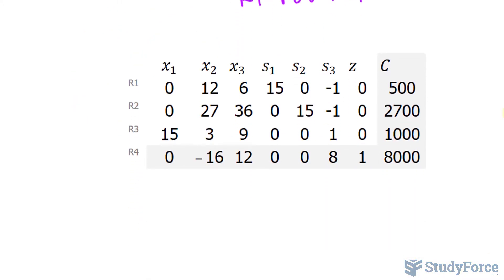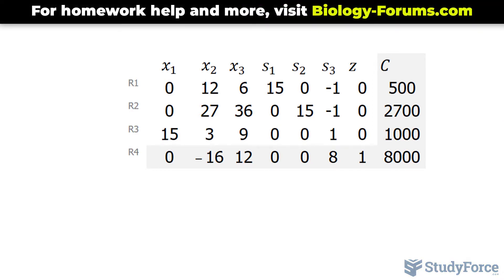At this point, you want to, again, reanalyze your objective function for negative numbers. The most negative number here is negative 16. This is our pivot column.